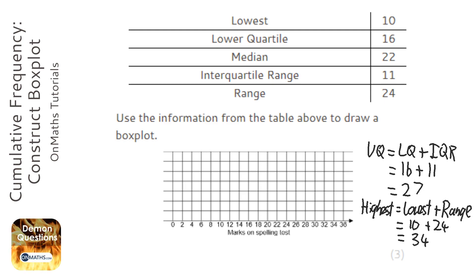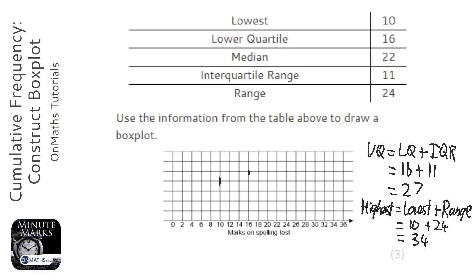Now we're going to draw the box plot. The scale is going up in 2s, so the lowest is 10 — I do a little notch at 10. The lower quartile is 16, so I start the rectangle at 16. The median is 22, so I do a line down there as well.